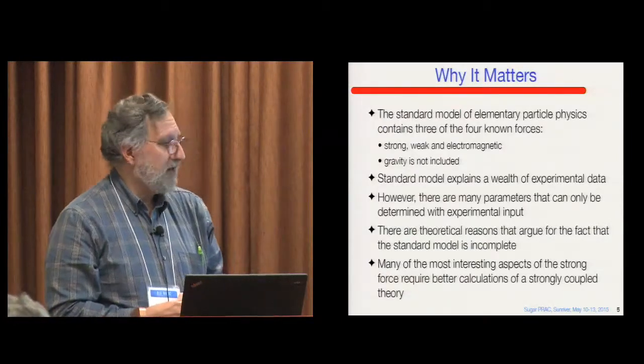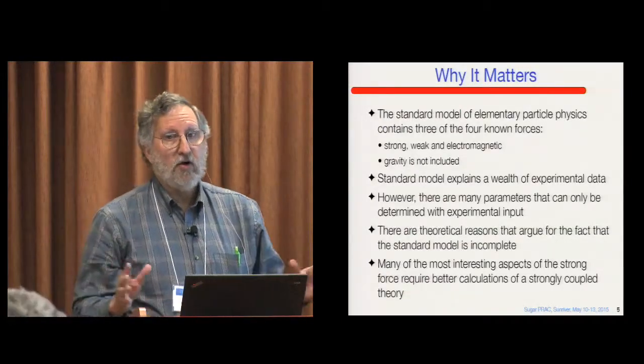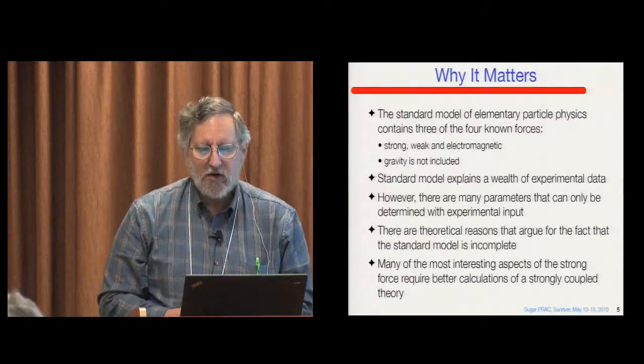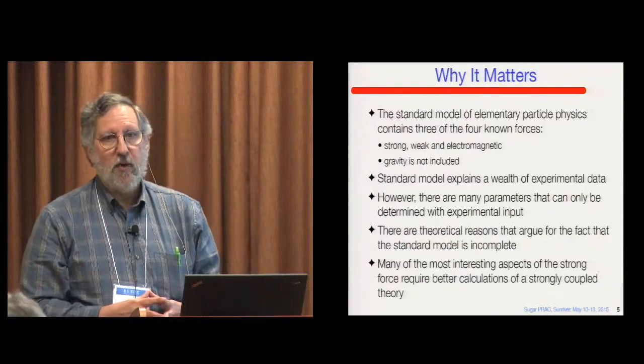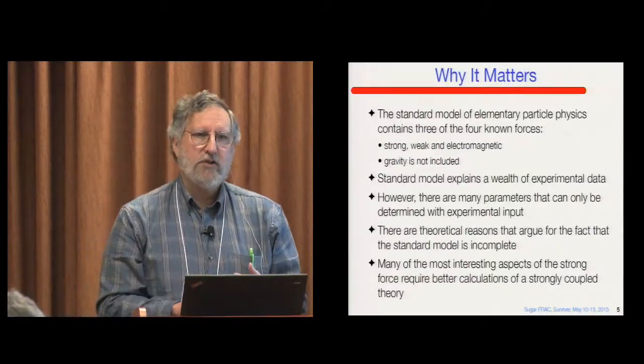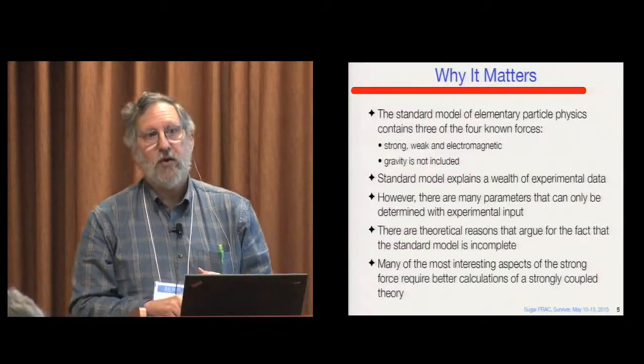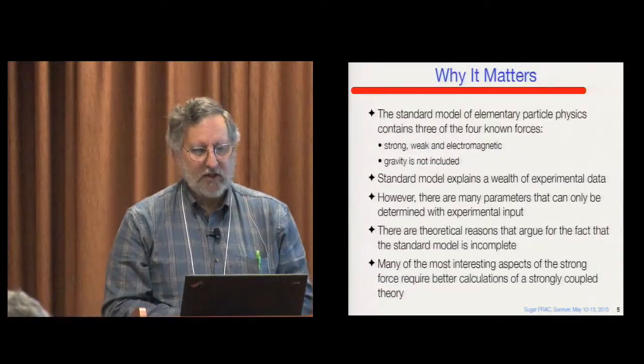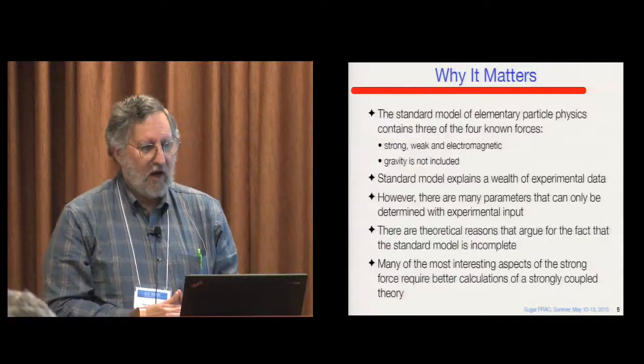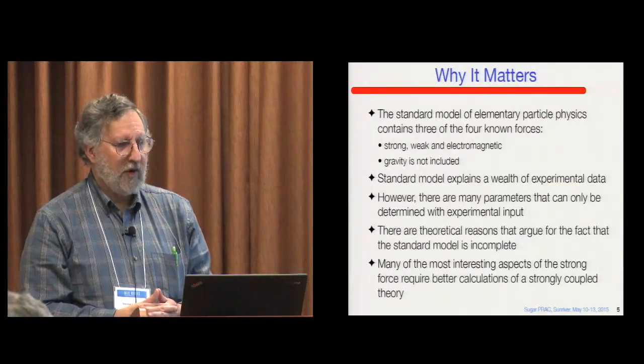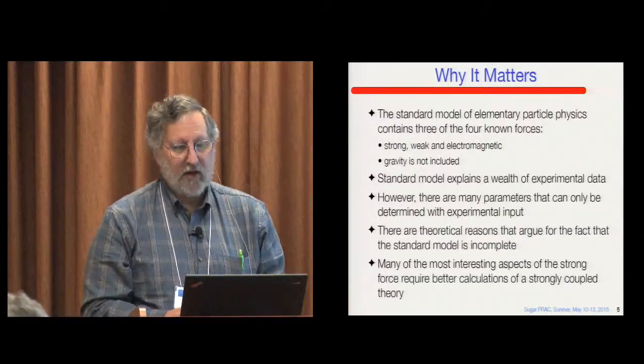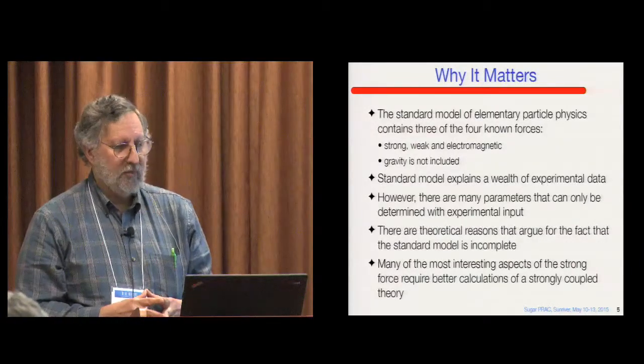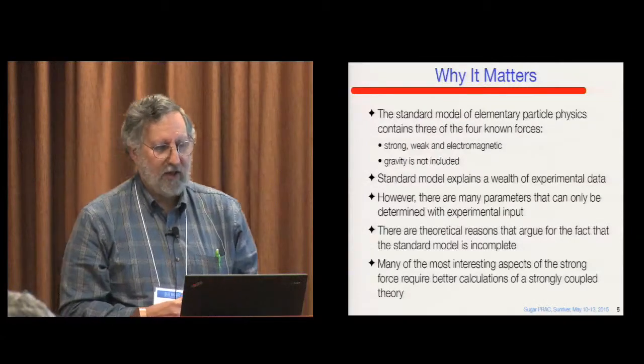The standard model explains an awful lot of experimental data. There are just a few chinks in it. And the fact that neutrinos have mass, which was not part of the original standard model, but is not that radical a departure. One of the things that disturbs us about the standard model in terms of having a fundamental understanding is that there are many undetermined parameters within the standard model, which would be the strength of the electromagnetic force, the strength of the weak force, and the masses of all the quarks and these CKM mixing matrix elements. So if there's a more fundamental theory, we would like to be able to explain those things. There are other more theoretical reasons why we don't think the standard model is complete, but there's no time to go into that here.